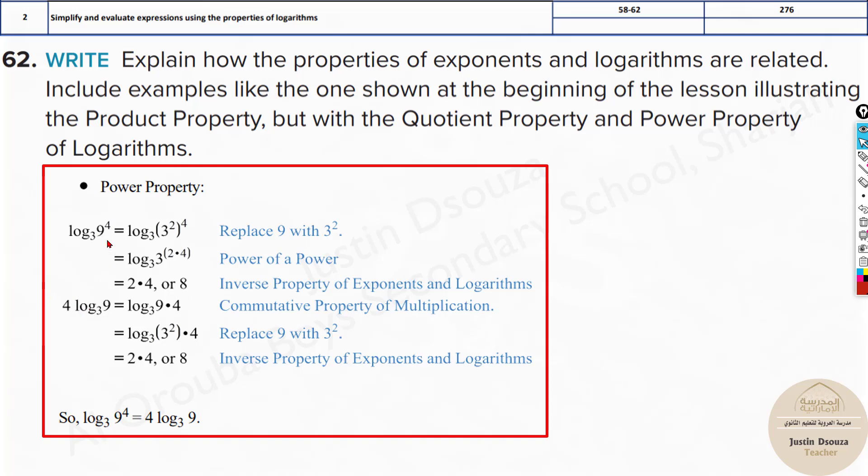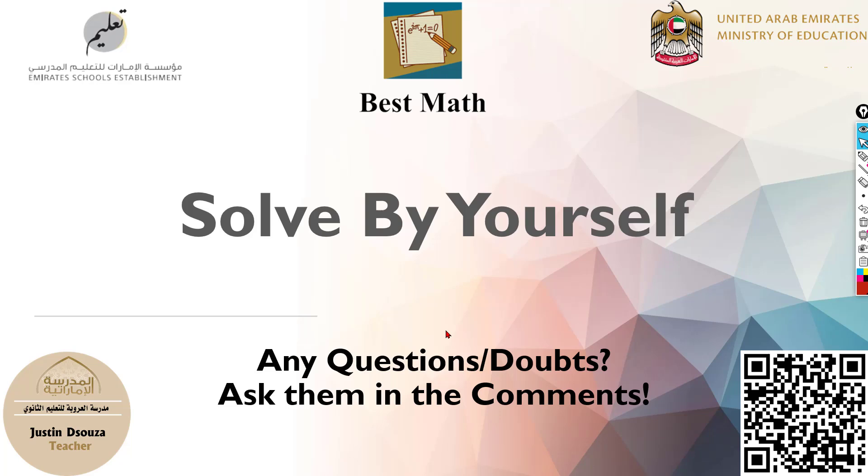If 4 is multiplied outside to log base 3 of 9, we can do the same thing. This was power, now we have it below. Let's solve it up. It will be 9 times 4, 4 is just left out separately. 9 can be written as 3² and log base 3 and 3 cancels out. 2 remains, the answer is same. So this is how we can tell these both are related to each other. That is how we can easily prove them up and that's the end of this topic.